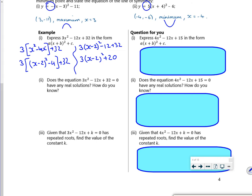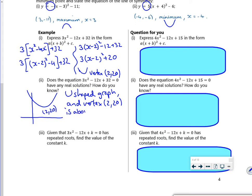So does the equation have any real solutions? So let's think about this picture. It's a U-shaped graph with a vertex at (2, 20). If it's a U-shaped graph with a vertex at (2, 20), it can't possibly have any roots. So the vertex, it's a U-shaped graph, and the vertex at (2, 20) is above the x-axis, therefore no real roots.